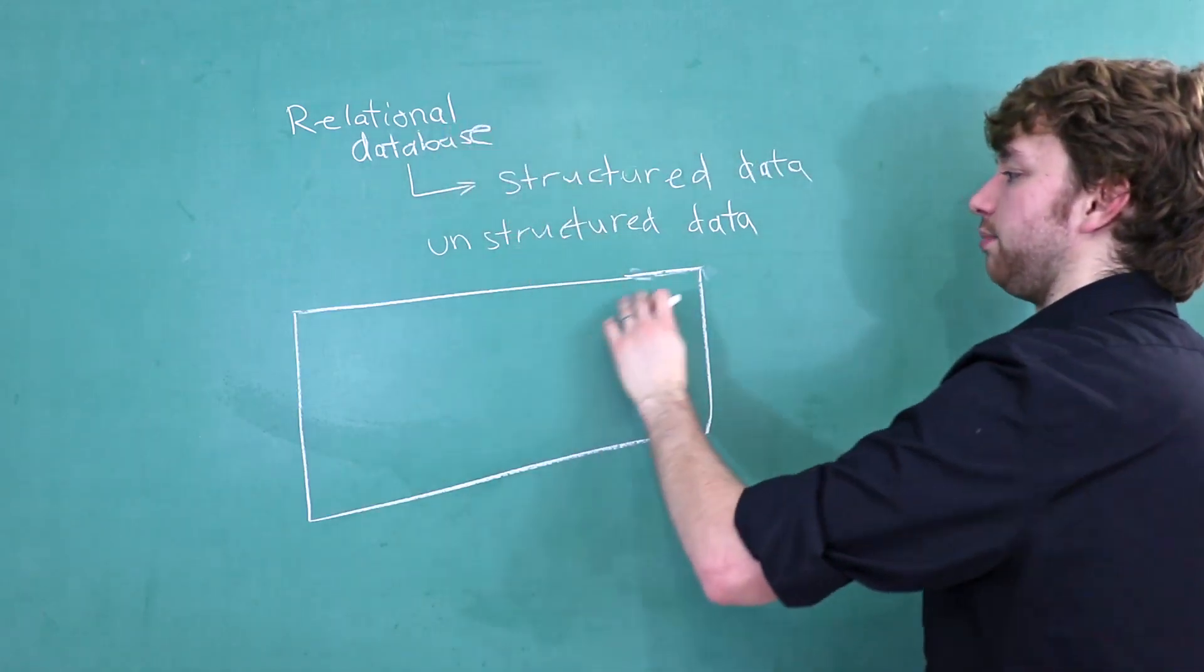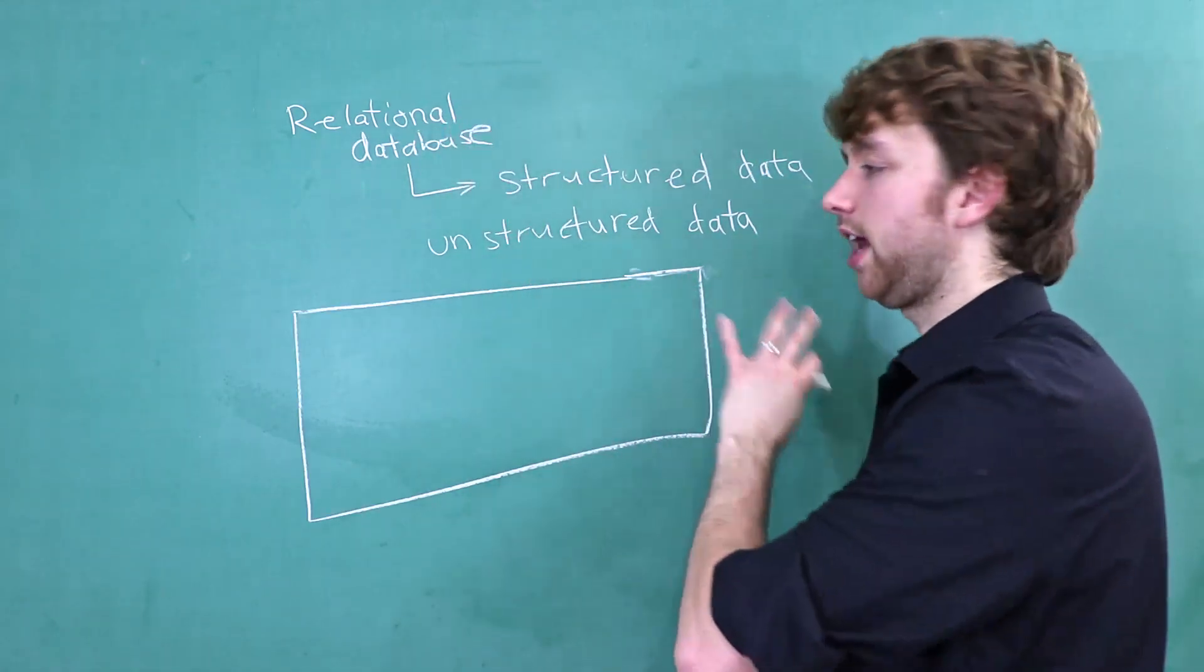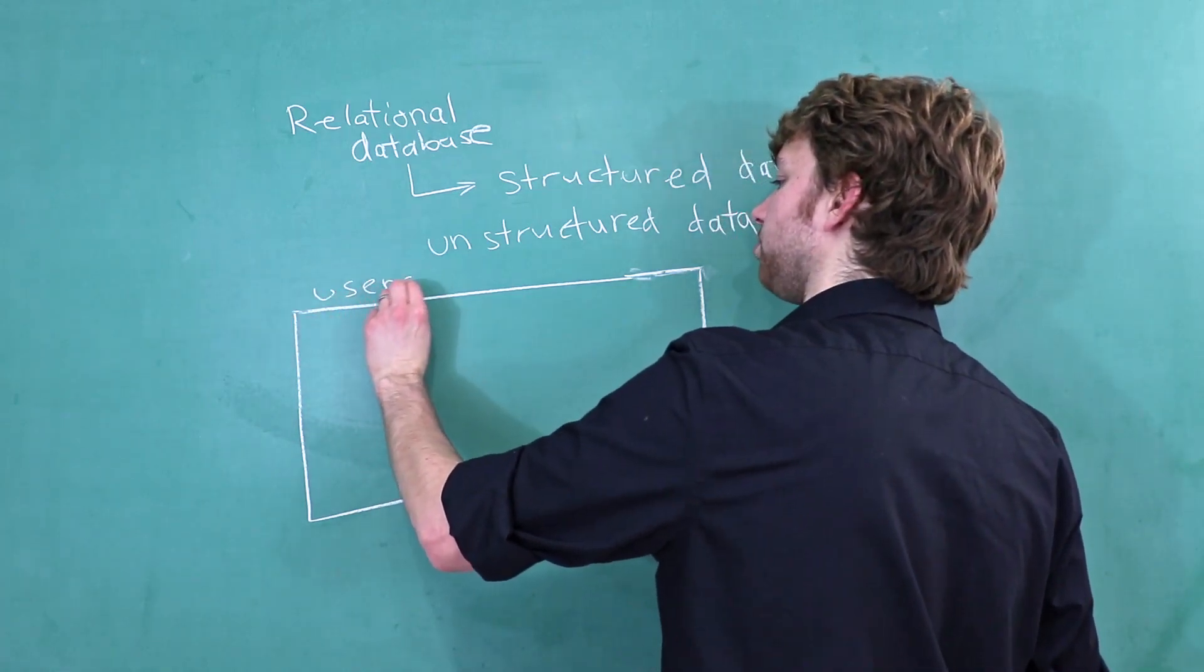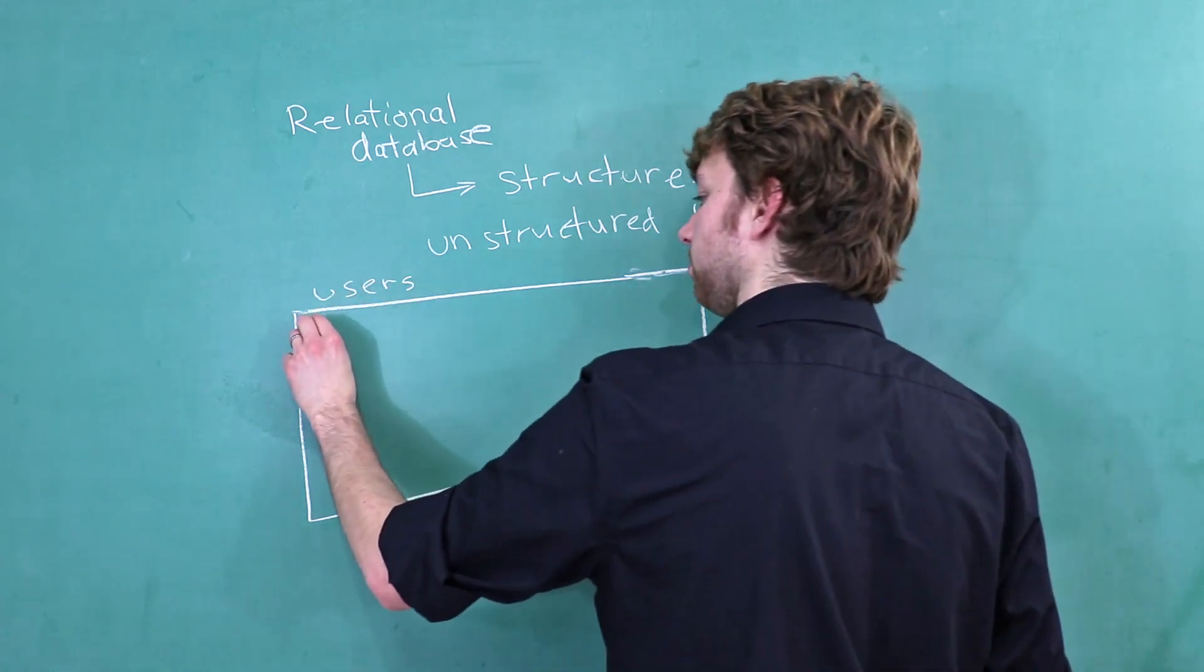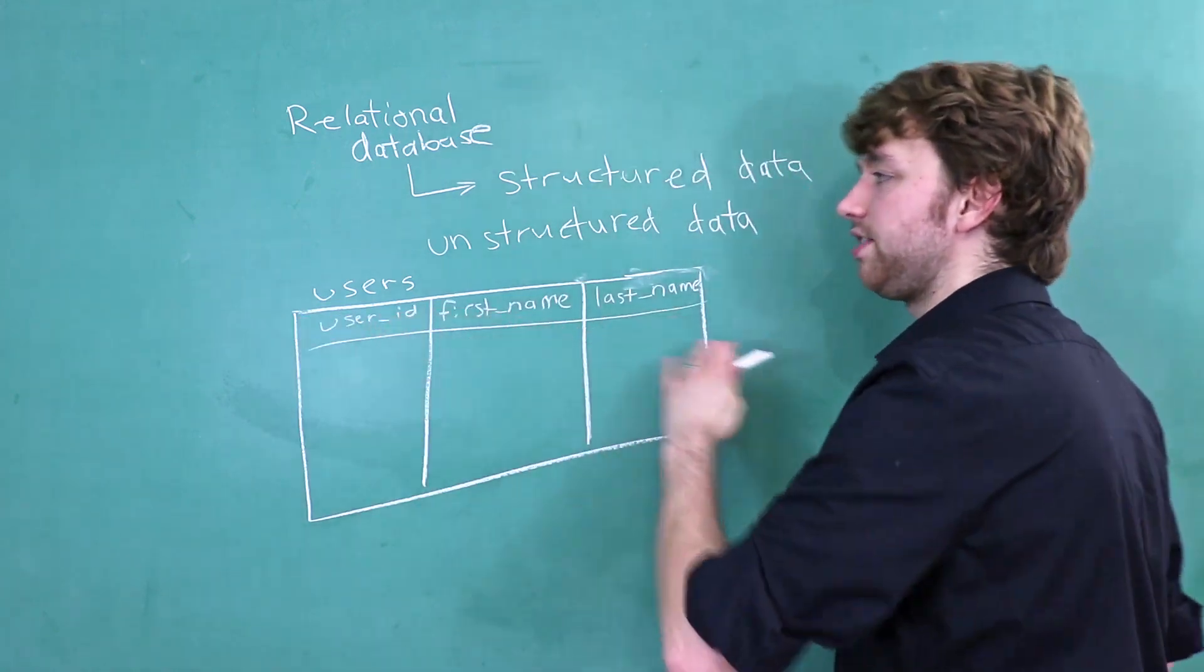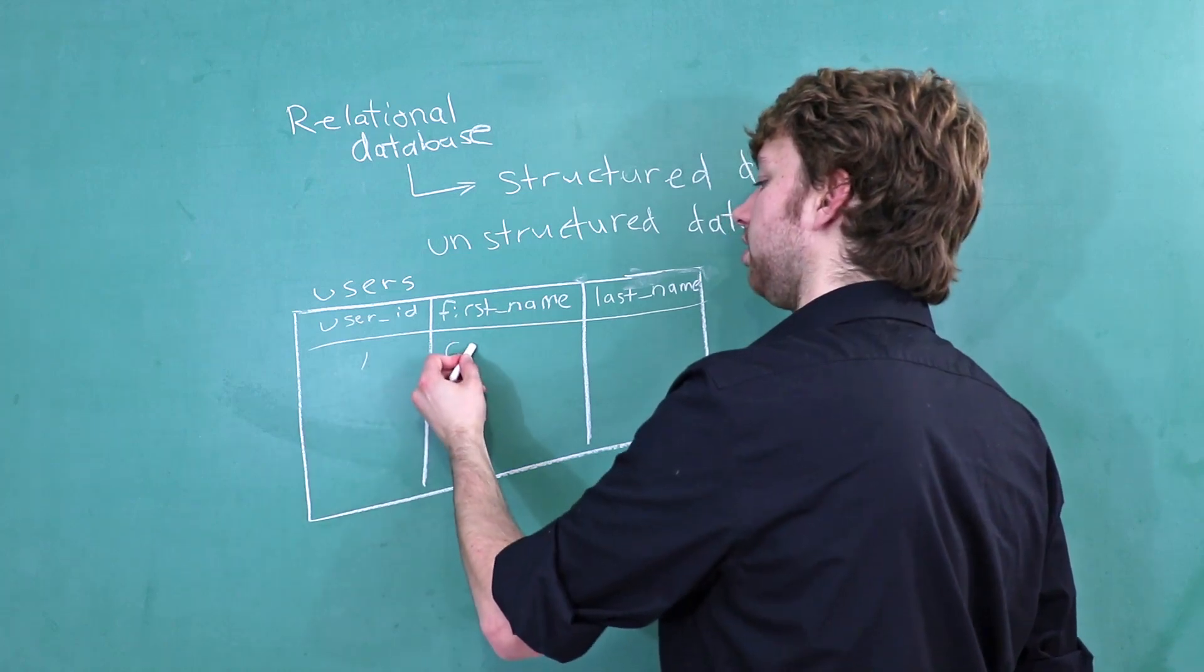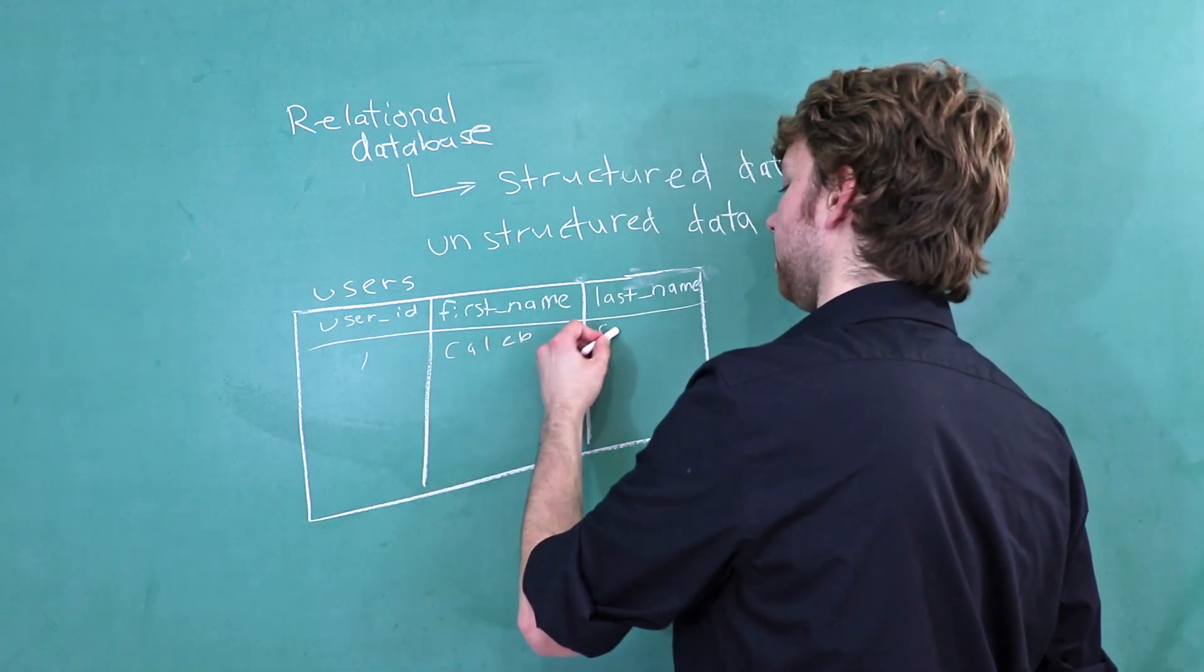When we are working with a relational database, we represent our data in tables. So this is a table and it's going to have a name. For example, users. And then we're going to have columns. These columns define the structure of our data. Every single user in here is going to have the structure made by this table.